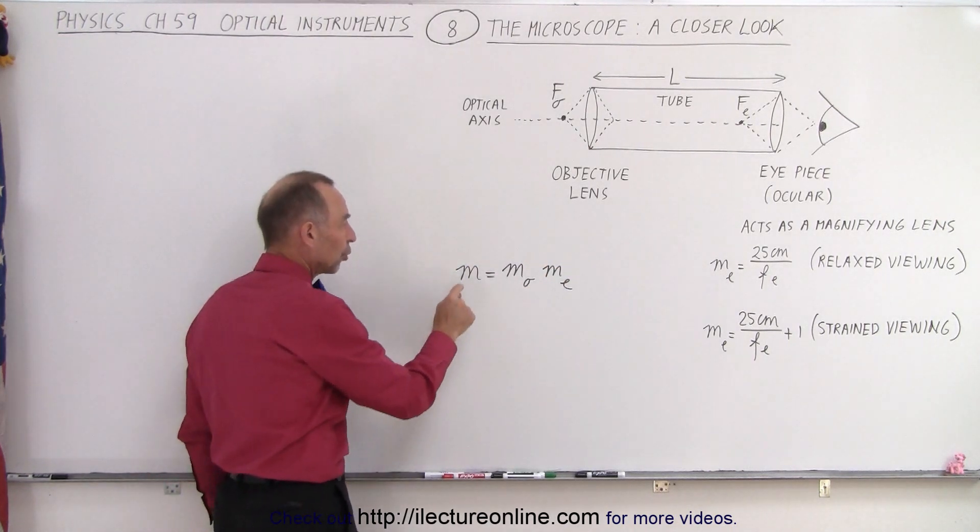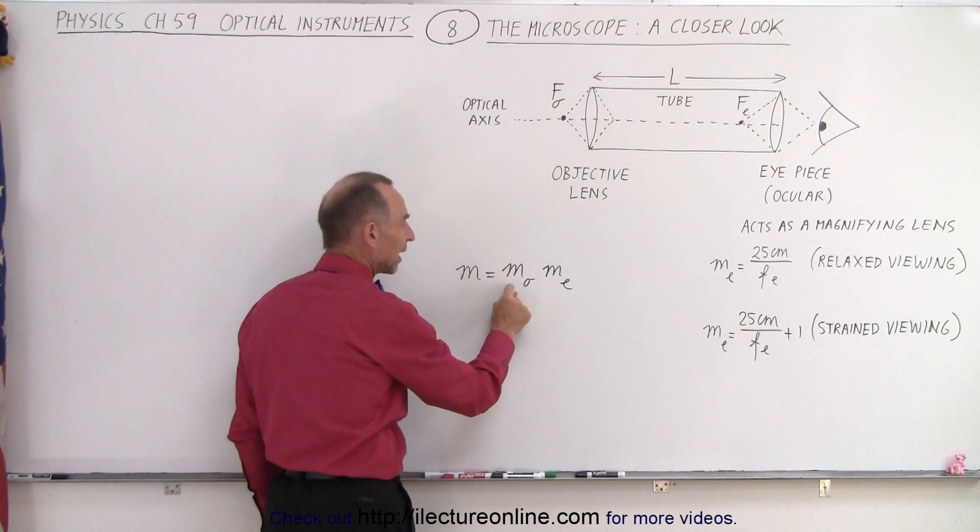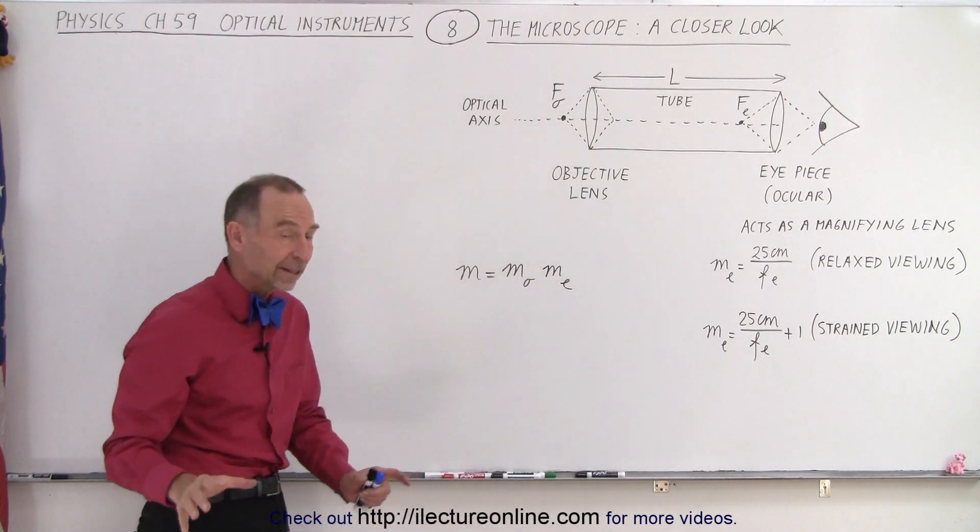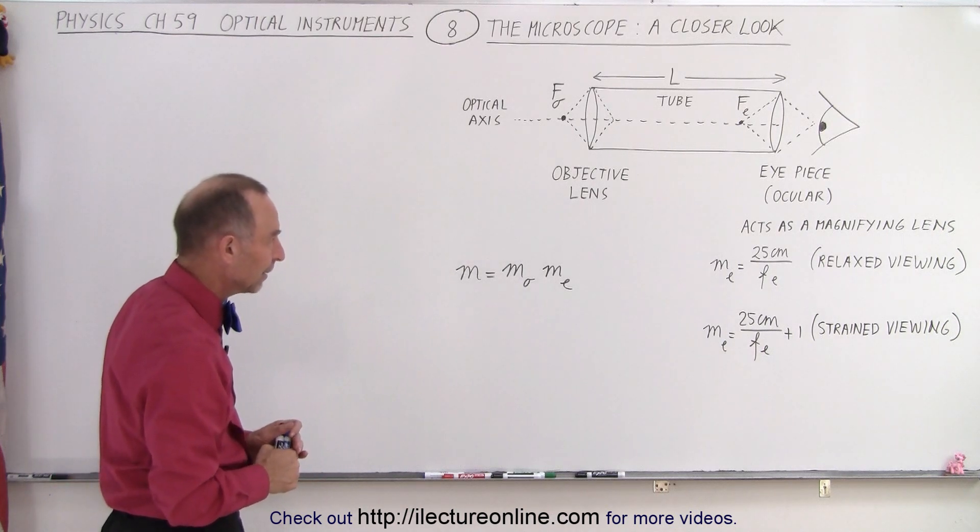And then we can see that the total magnification of a microscope is going to be the product of the magnification caused by the objective and the magnification caused by the eyepiece. Now we don't know yet at this point what the magnification is of the objective, we'll see that in the next videos to come.